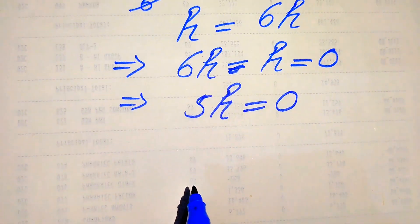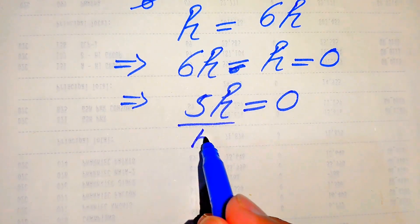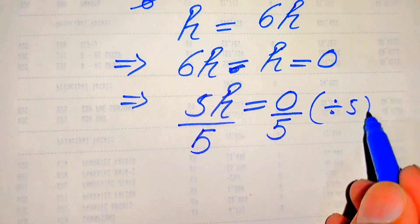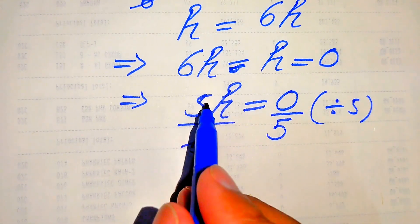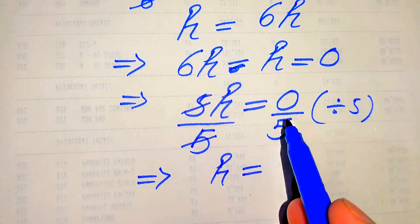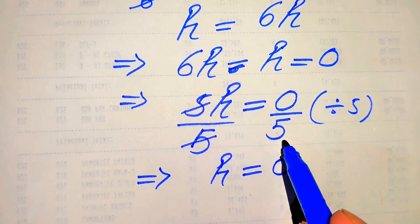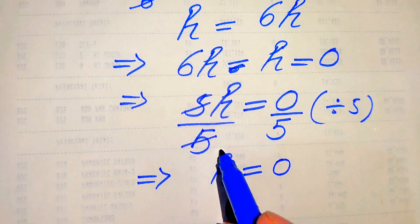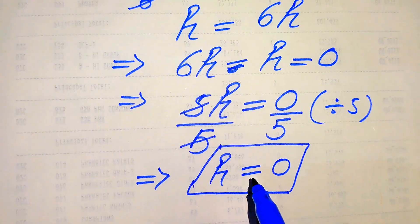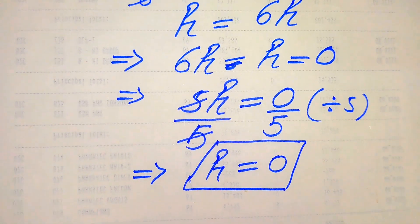Because we are solving for the values of h, we divide both sides by 5. This 5 cancels out with this 5, and we get h equals 0 over 5, which equals 0. We know that 0 over something is always 0. So the final answer from the first method is h equals 0.